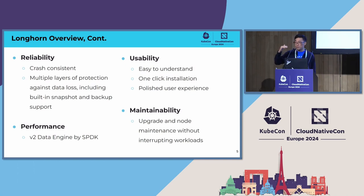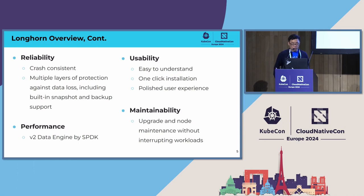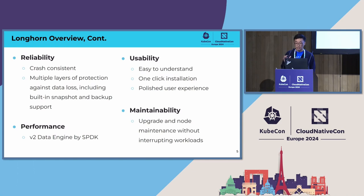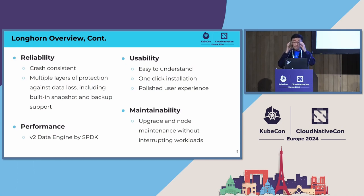At a high level, there are some pillars we focus on when developing Longhorn. The first one is reliability — we want to make sure the data is crash-consistent, respecting data integrity. We also have multiple layers of protection: in-cluster and out-of-cluster backup. For performance, we have V1 volume right now based on iSCSI. But we want to do something different for V2 — it will be NVMe over Fabrics based on SPDK. I will talk more about V2 later. For usability, we want to make Longhorn easy to understand — if you know Kubernetes concepts, you can quickly understand Longhorn using the same patterns.